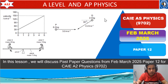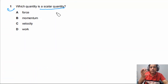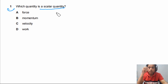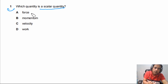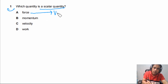Question one asks: which quantity is a scalar quantity? First of all, we need to understand the difference between scalar and vector. Scalar quantities have magnitude but no direction. Vector quantities require both magnitude and direction to be described. For example, force is a vector quantity — when we say force equals four newtons, we also need to say the direction: to the right or to the left.